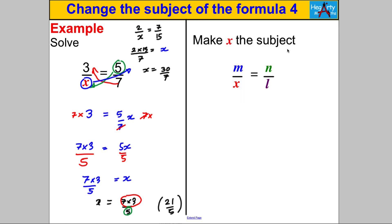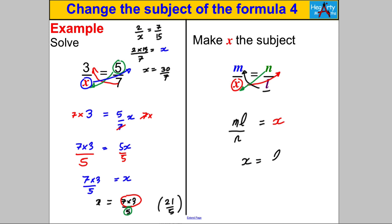Let's apply that to changing the subject of the formula — try to make X the subject of M over (NX) equals L. We multiply both sides by X, so X ends up on its own on the left-hand side. We multiply both sides by L, so L ends up multiplying by M. We divide both sides by N, so N ends up on the denominator. So X equals ML over N, and writing in alphabetical order: X equals LM over N.